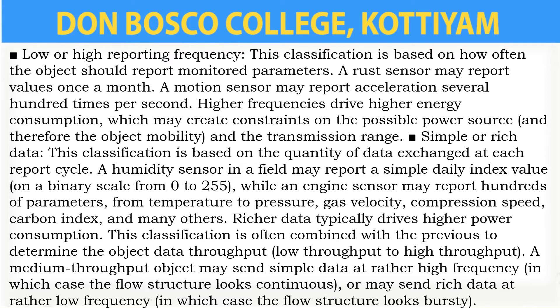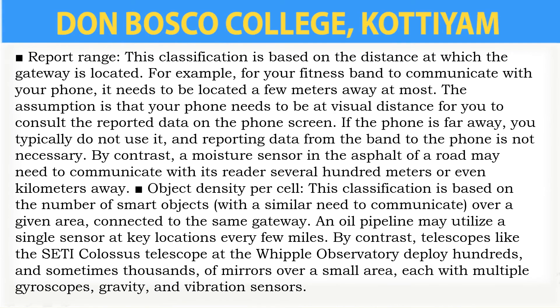The fourth classification is simple or rich data. This classification is based totally on the extent of records exchanged at every reporting cycle — for example, a humidity sensor in an area may report an easy daily index value. Another classification is according to the report range, which is based on the distance at which the gateway is located. Another classification is based on object density per cell, which is based on the number of smart objects over a given area linked to the identical gateway.